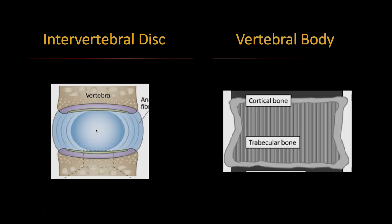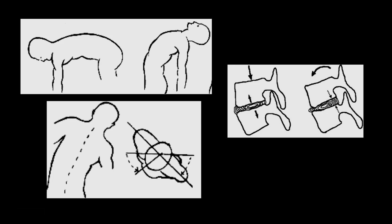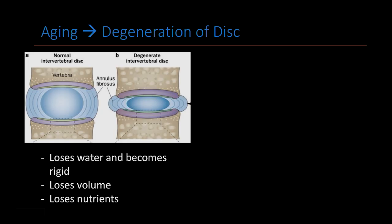The vertebral body also has two major parts: the cortical bone, which is the hard shell, and the trabecular bone, which is the inner spongy portion where the bone marrow is. The spine has significant flexibility — you can have flexion, extension, lateral bending, and rotation. When the spine bends forward and backwards, it distributes pressure on the discs pretty evenly. However, as you age this changes because the disc starts to lose water, becomes stiffer, loses volume, and also loses nutrients.